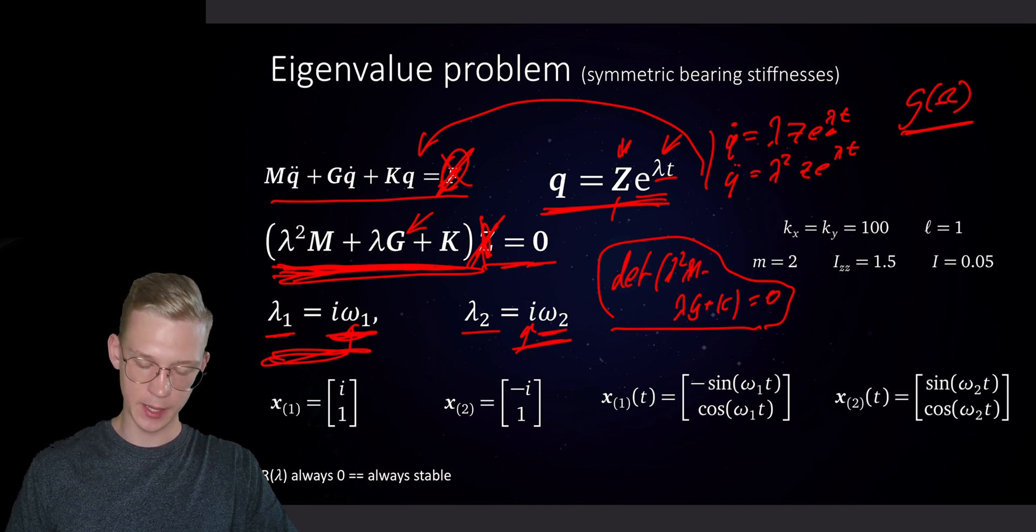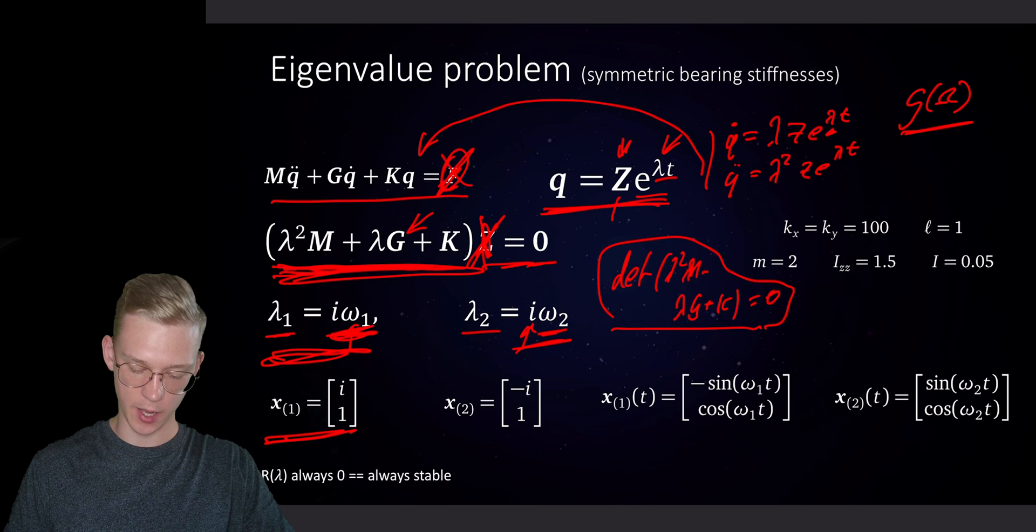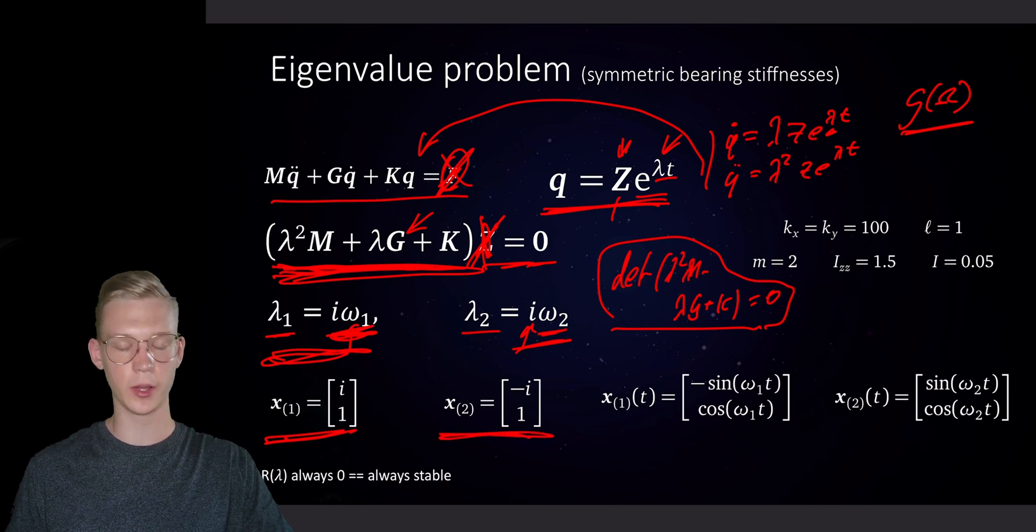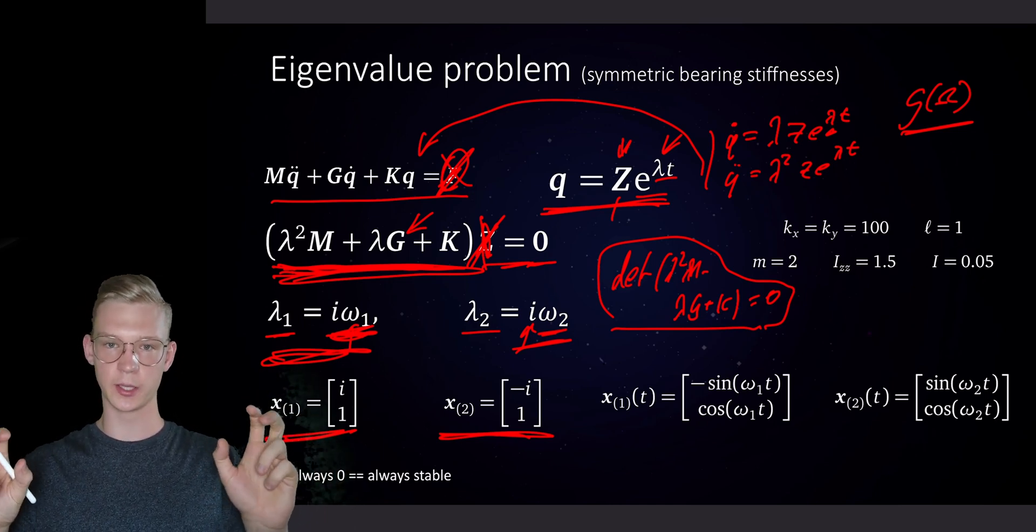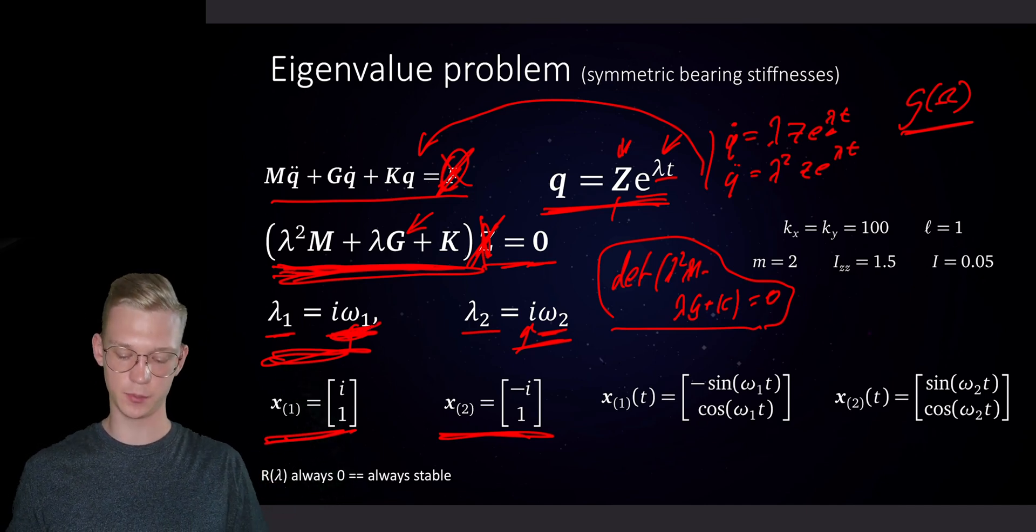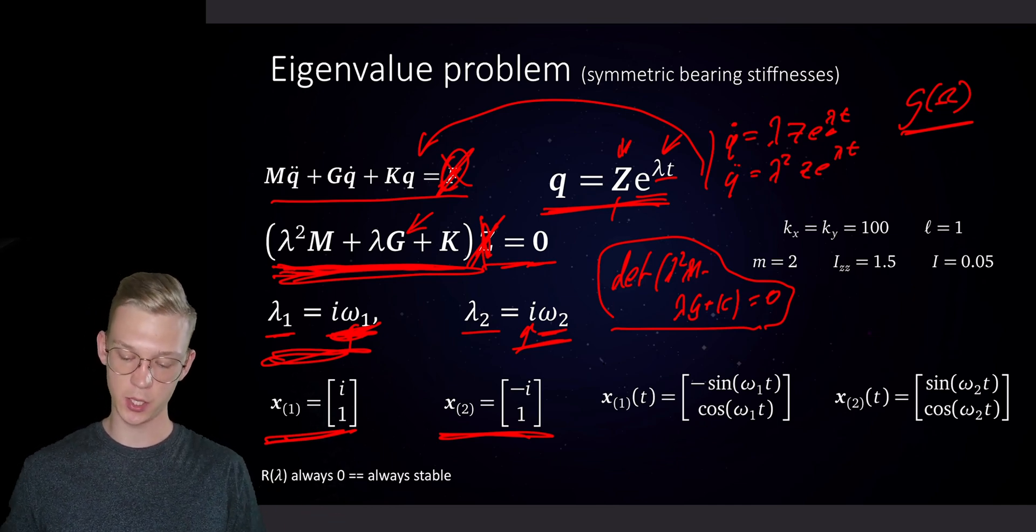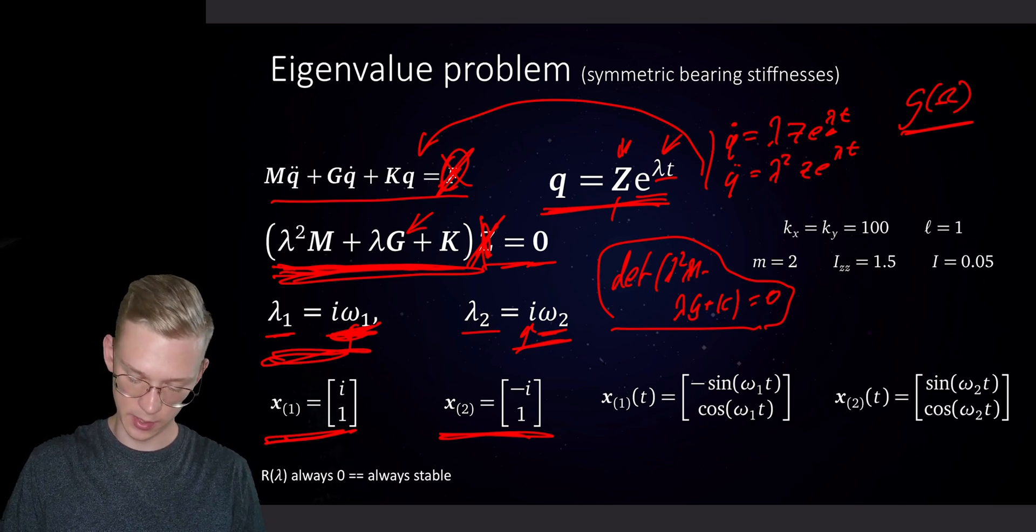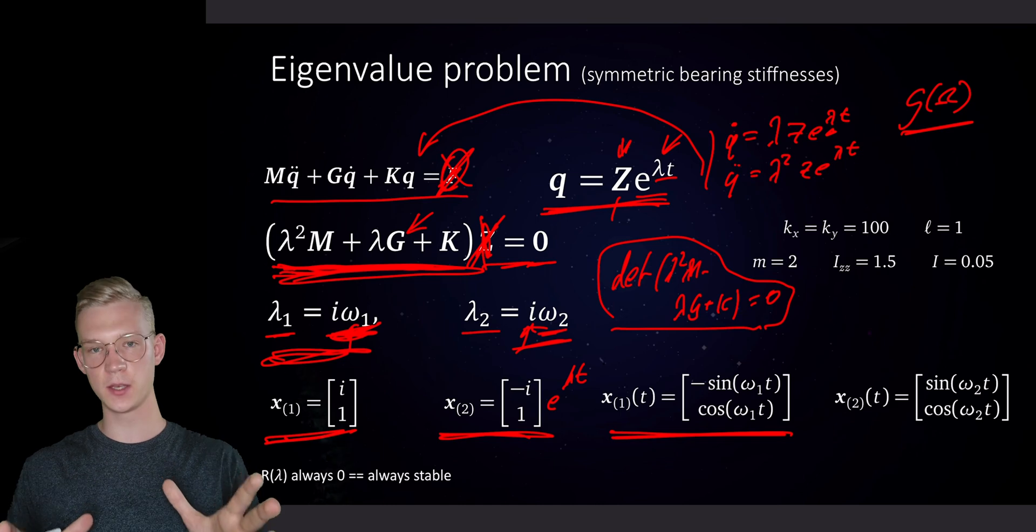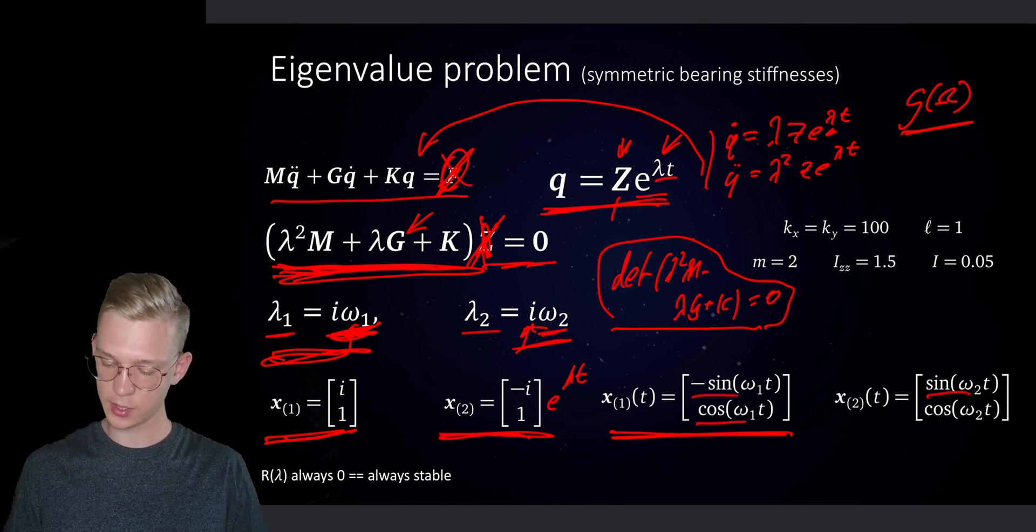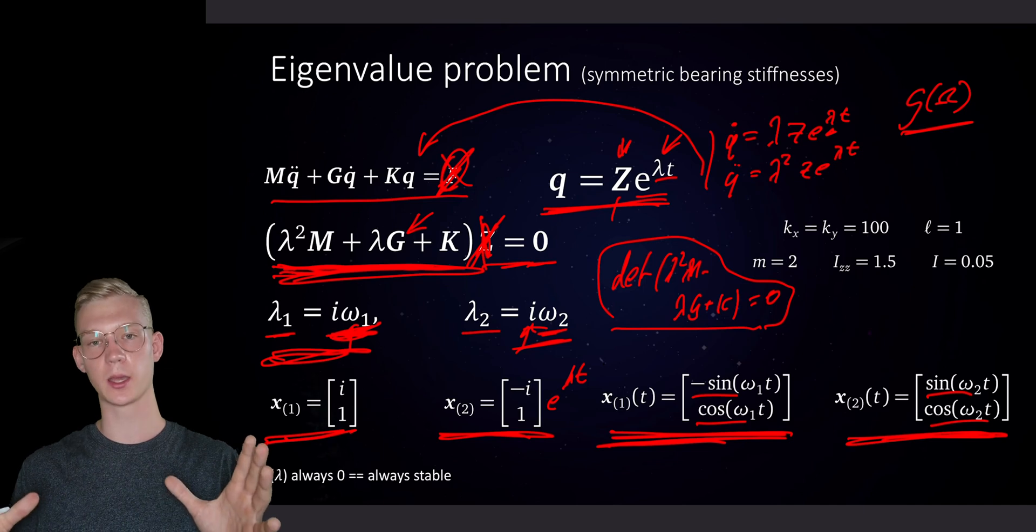But the interesting part is that the eigenvectors, they stay always the same because we have an imaginary part here. Our eigenvectors are i1 and minus i1. So we will have two distinct eigenvectors or better to say two constant eigenvectors with a changing possible rotation speed. But if we talk about the physical solution of that system, we can't use imaginary numbers. So we have to multiply our lambdas with our e lambda t and we will get the actual physical vector. So we will get a minus sine and a cosine and a sine and a cosine for the first. This is our first eigenvector and this is our second eigenvector. So it's basically like a mode shape.